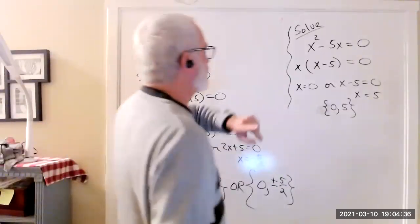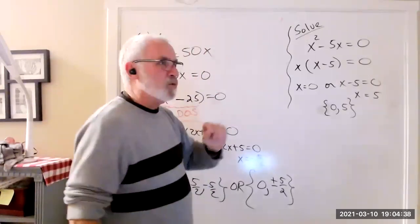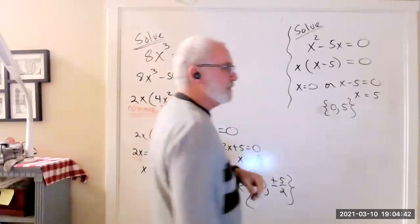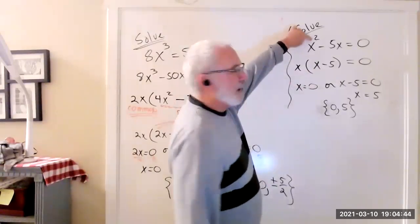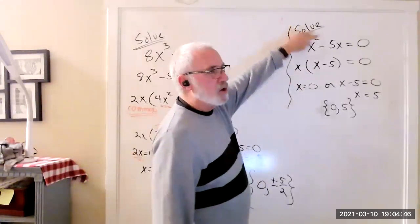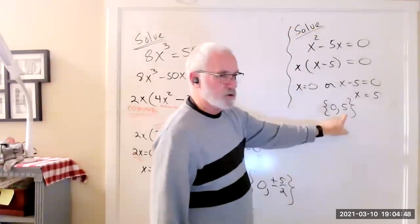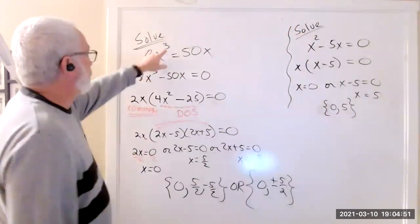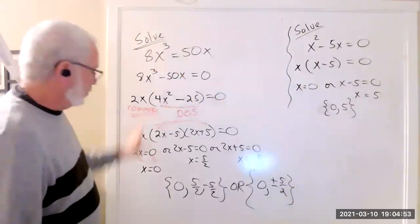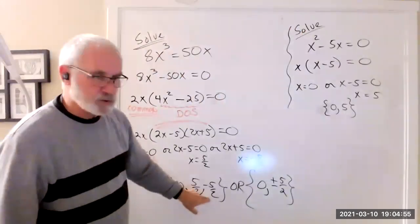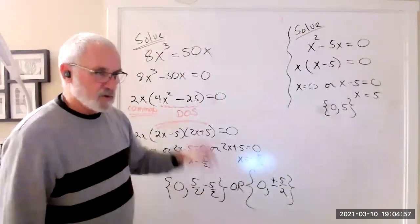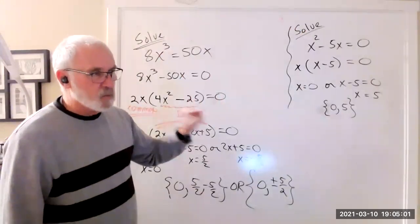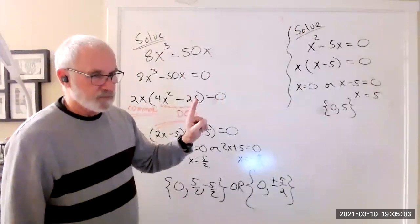General rule of thumb — it's not 100% true but about 99% true: if you have a power of 2 equation, you will have 2 answers. If you have a power of 3 equation, you'll generally have 3 answers. Think back to the first problem — it was a power of 1, and we had one answer.